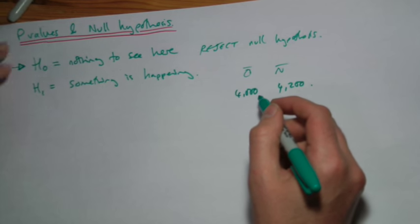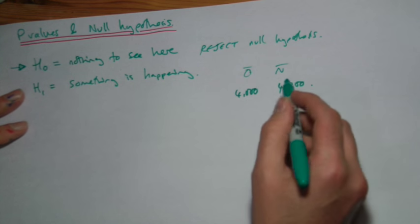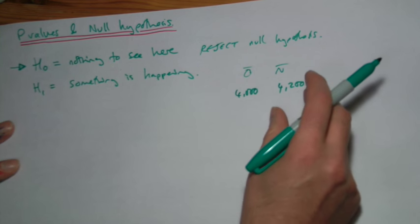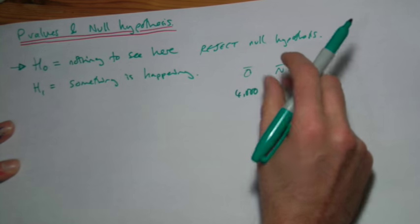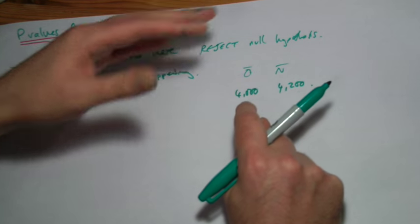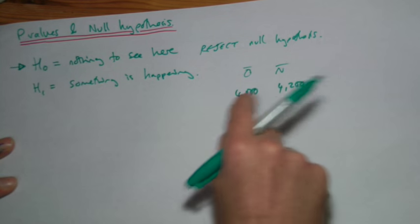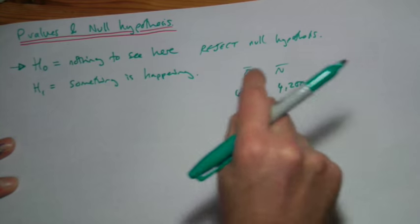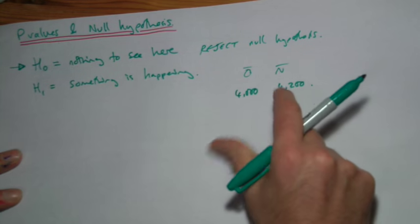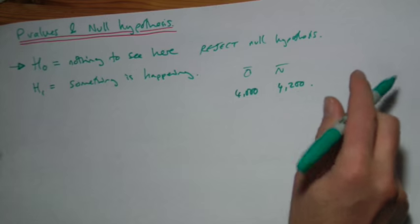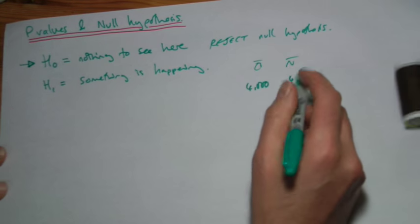But we can't really say that. We can't say just by looking at those numbers. Maybe we had an odd sample of people for some reason. Maybe this was an odd sample of people who just didn't respond to the drug. We don't know. So what the t-test does is it will compare these two things and it will give us a value, called the t-value. Now what we need is some kind of way to say